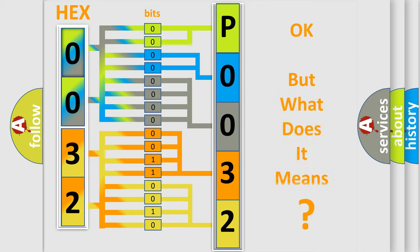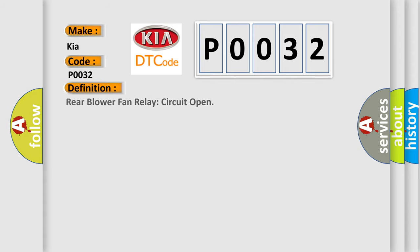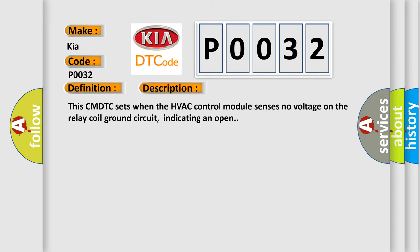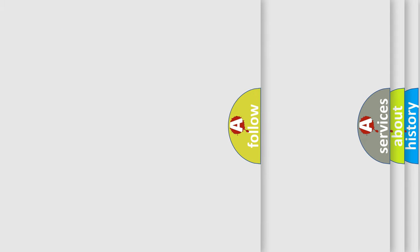We now know in what way the diagnostic tool translates the received information into a more comprehensible format. The number itself does not make sense to us if we cannot assign information about what it actually expresses. So, what does the diagnostic trouble code P0032 specifically mean? The basic definition is: Rear blower fan relay circuit open. This DTC sets when the HVAC control module senses no voltage on the relay coil ground circuit, indicating an open.